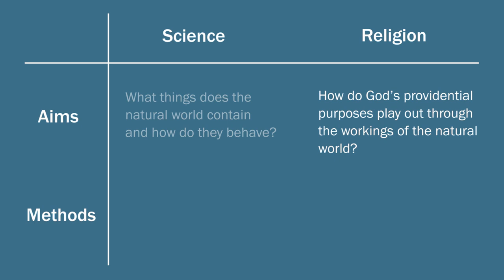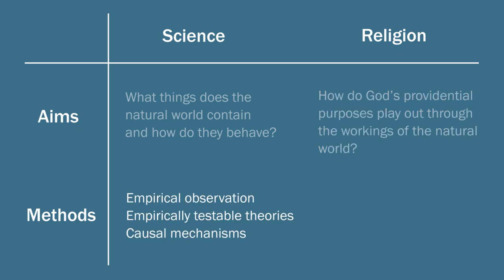So in this view, science employs empirical observation and empirically testable theories to explain what there is and the causal mechanisms that explain why those things act the way they do. But religion, on the other hand, uses religious revelation and maybe religious experience to discover the purpose and the meaning of the happenings in the natural world.